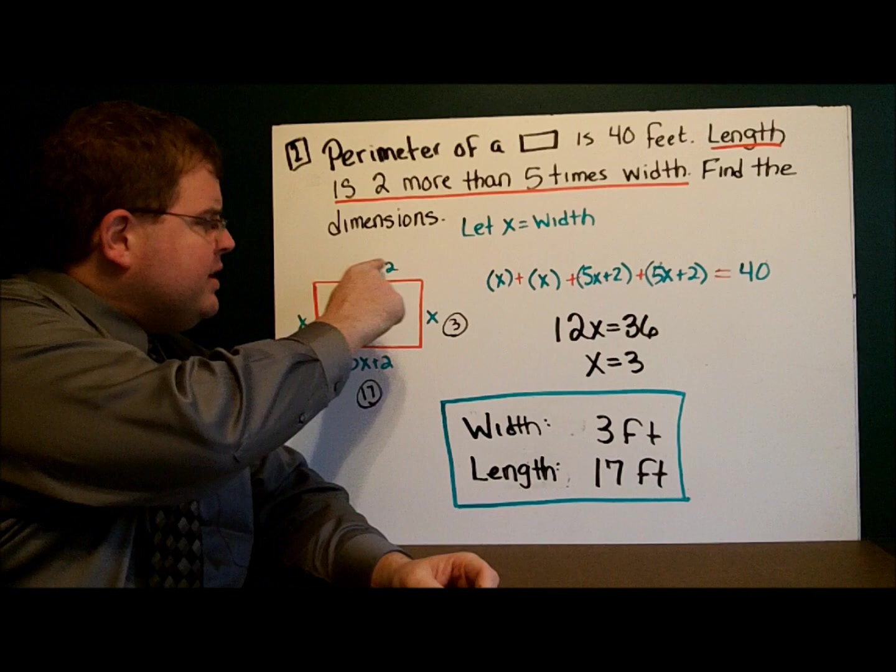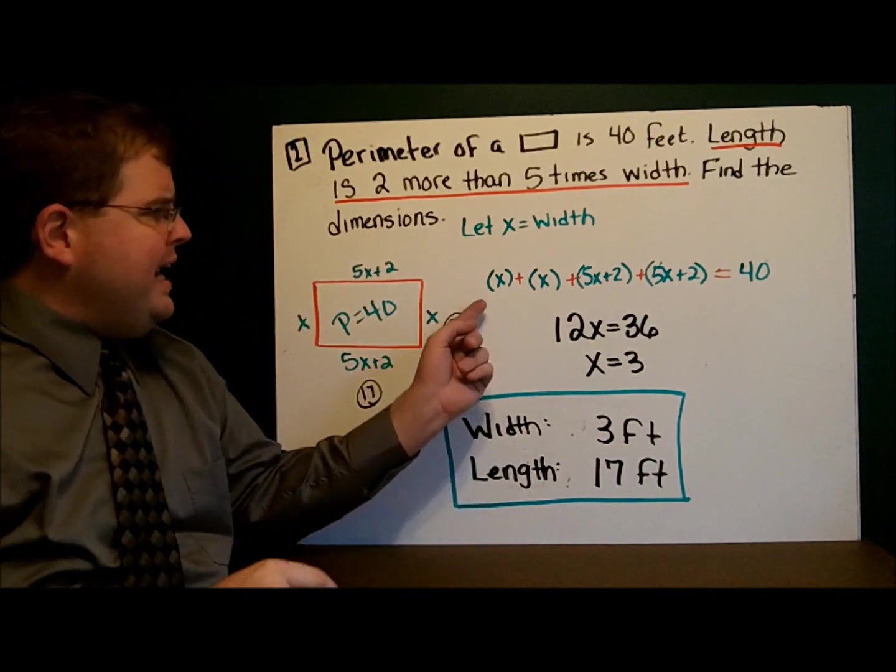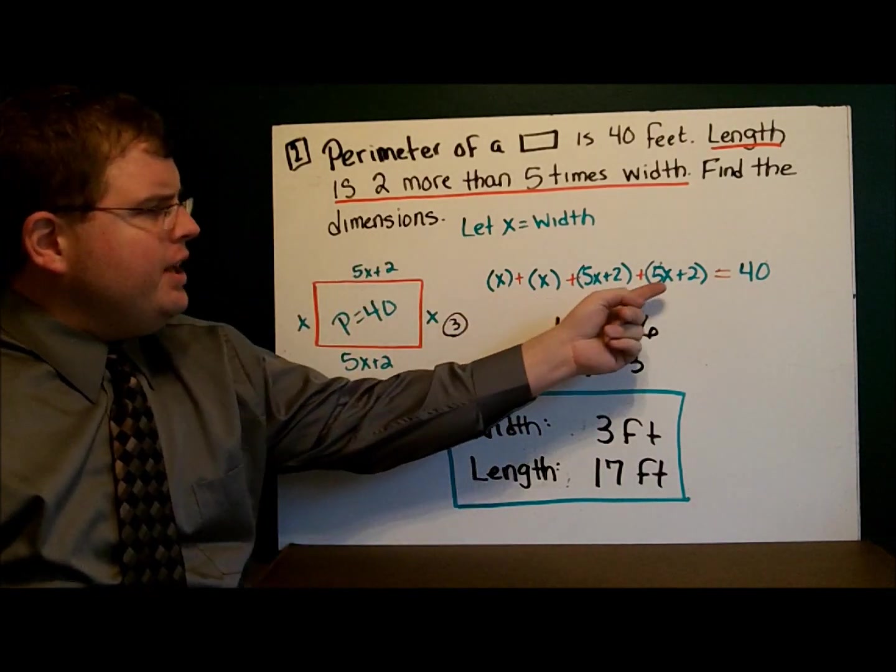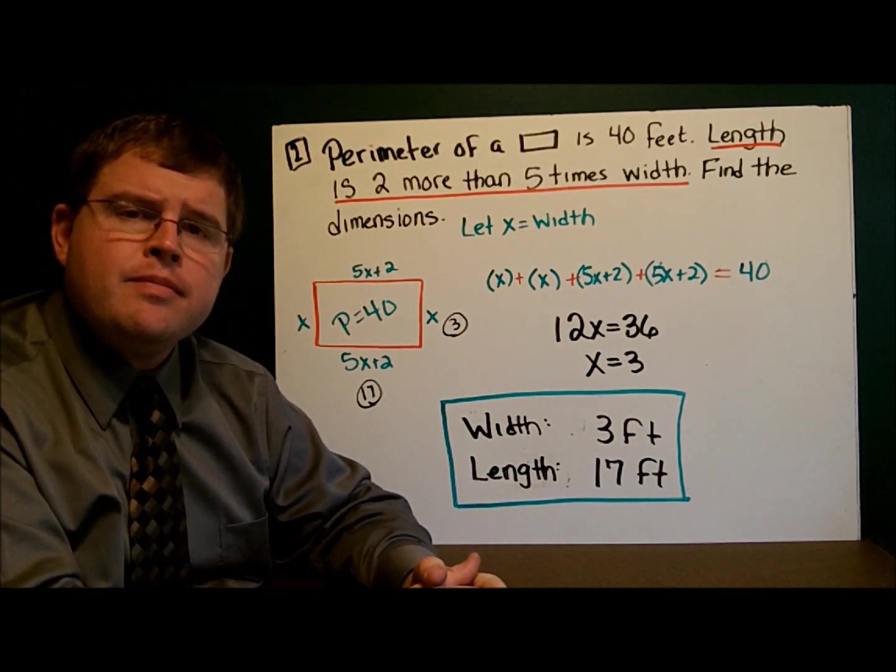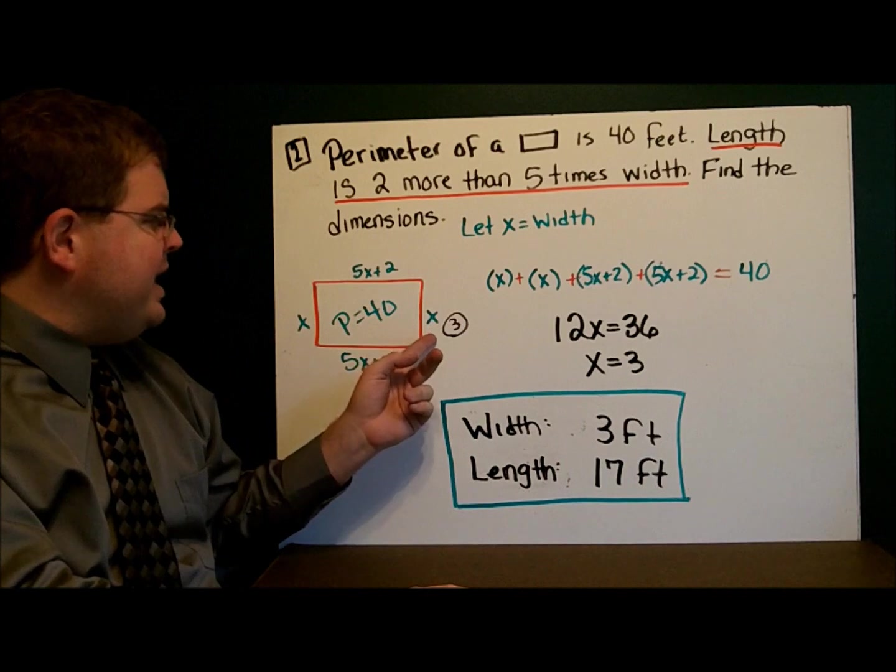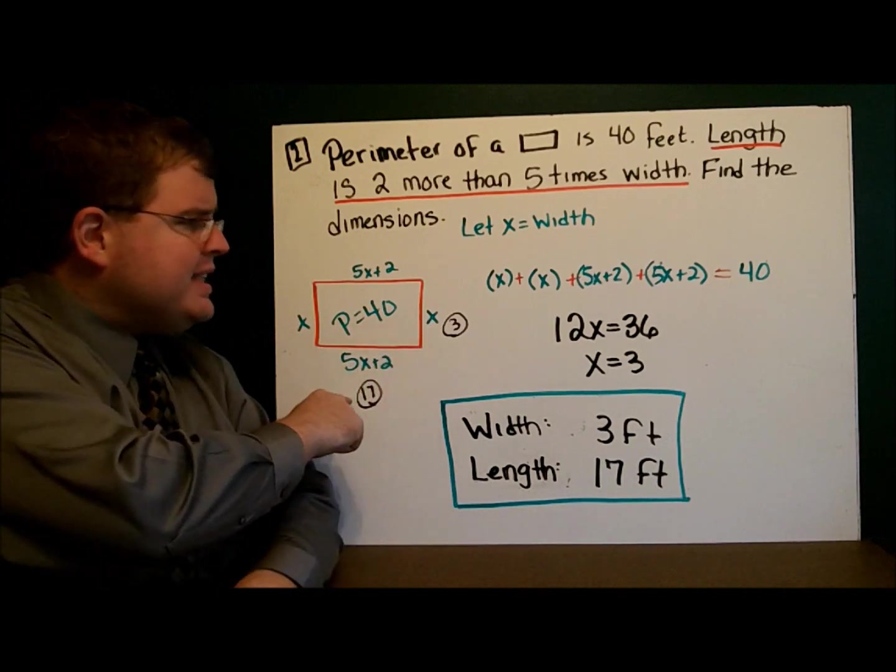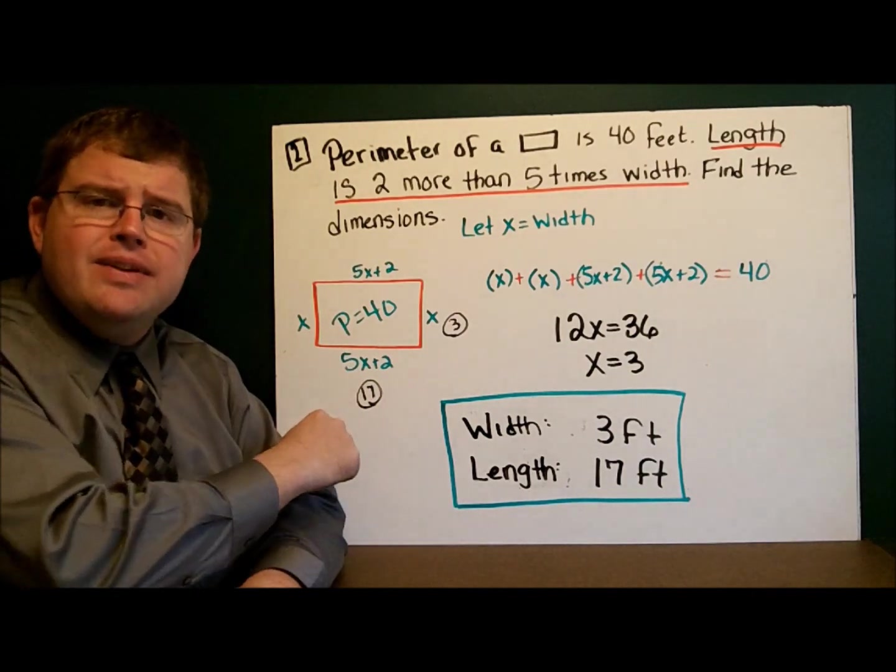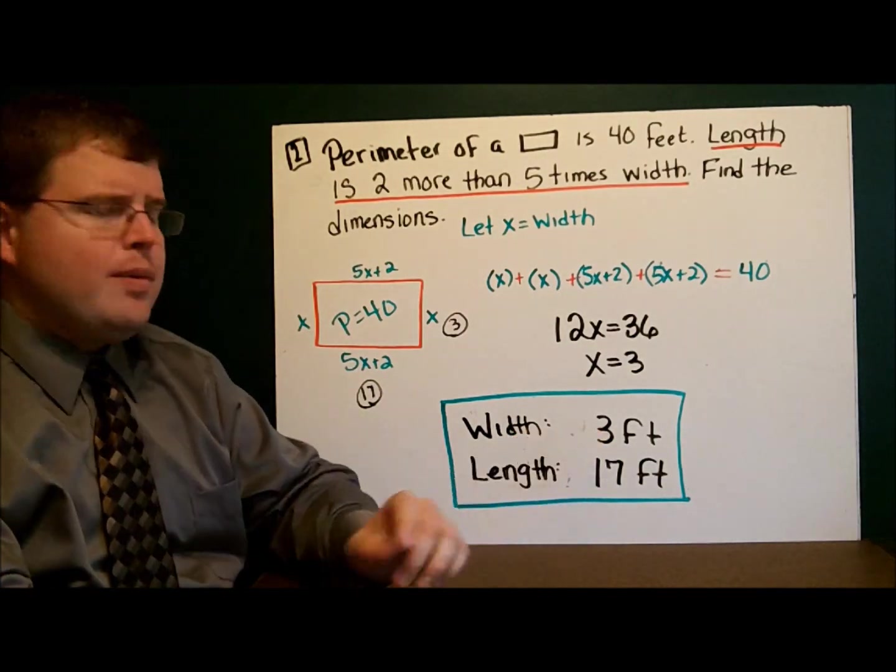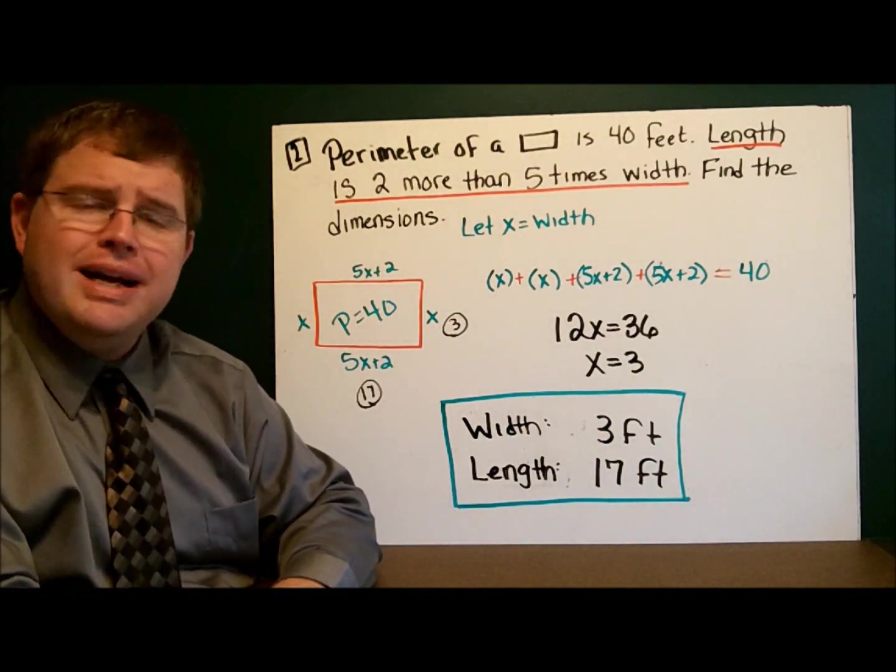So, I have the length of all four sides added up equals 40. I solve the equation, and I get x equals 3. That means this side here must be 3. This side down here is 5 times 3 plus 2, or 17. So the dimensions of the rectangle are 3 feet by 17 feet.